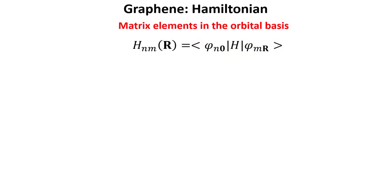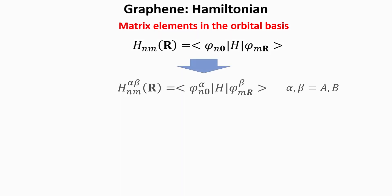First we recall that in the linear combination of atomic orbitals method, we need to compute the Hamiltonian elements in the orbital basis before getting the final Bloch Hamiltonian. Because we have a model consisting of more than one atom in the unit cell and several orbitals, it is convenient to relabel the orbital state indexes into orbital and atomic indexes. This is done here, where the superscripts in Greek letters label the atom sublattice in the unit cell, and the subscripts label the orbitals in each atom.